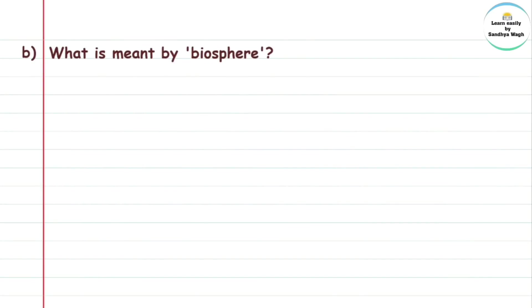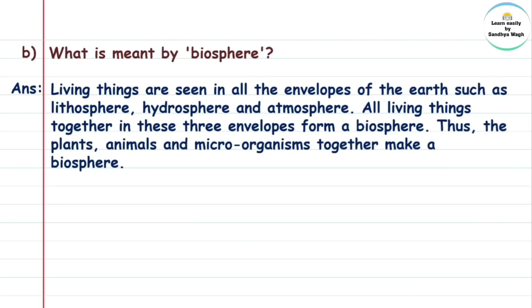Next question. B: What is meant by biosphere? Answer: Living things are seen in all the envelopes of the earth — such as lithosphere, hydrosphere, and atmosphere. All living things together in these three envelopes form a biosphere. Thus, plants, animals, and microorganisms together make a biosphere.